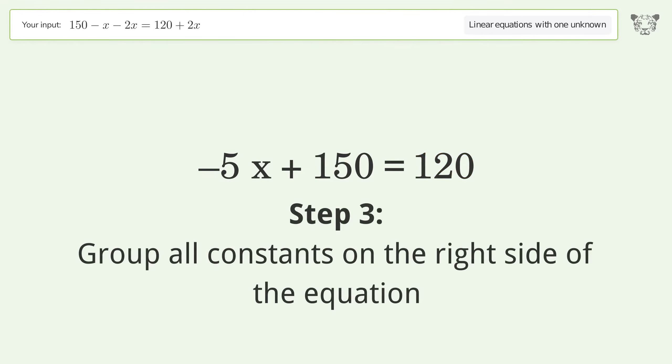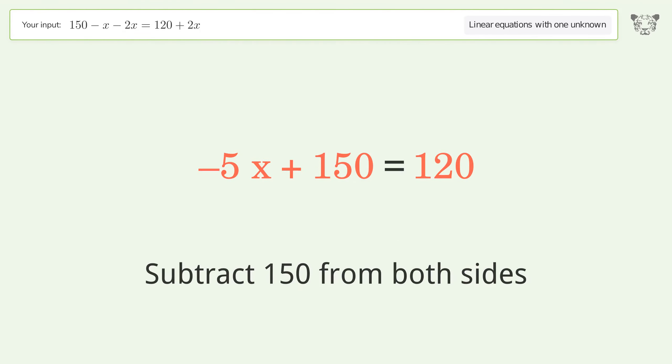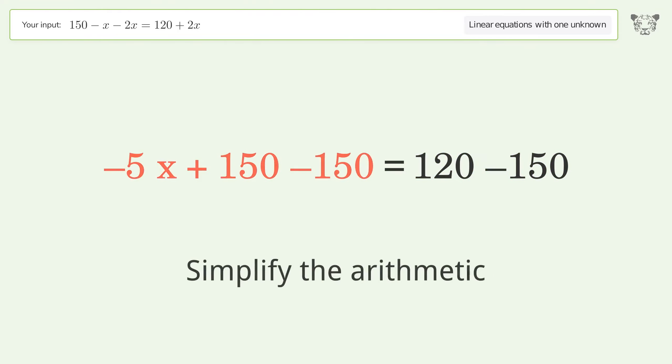Group all constants on the right side of the equation. Subtract 150 from both sides. Simplify the arithmetic.